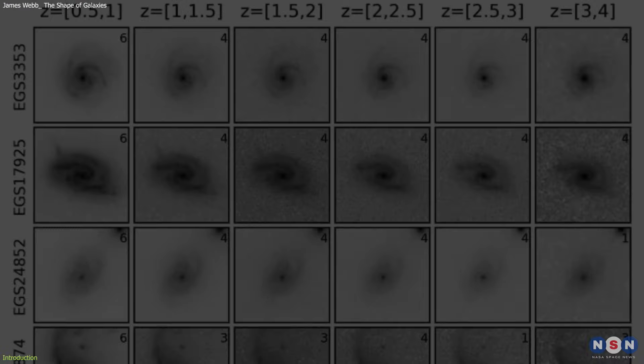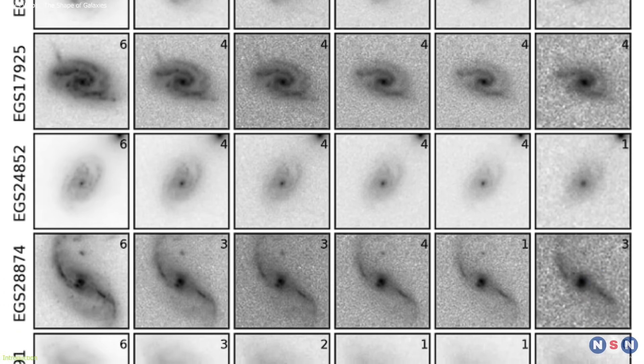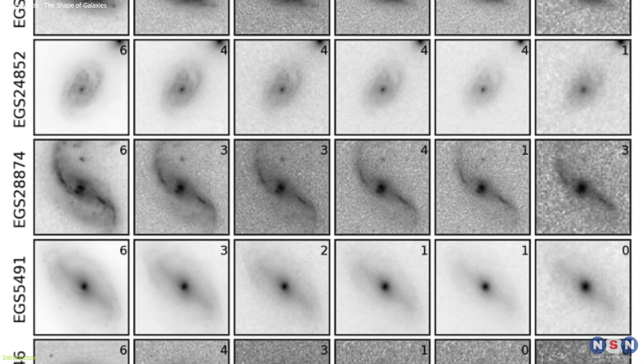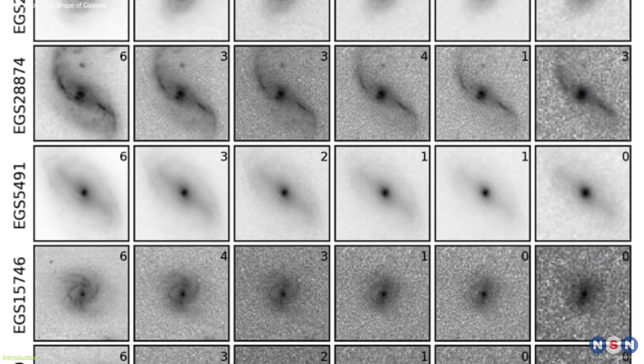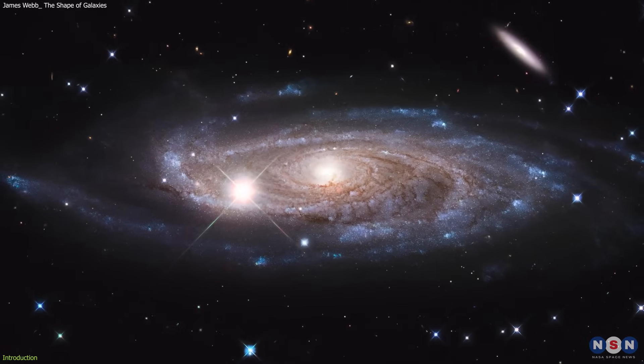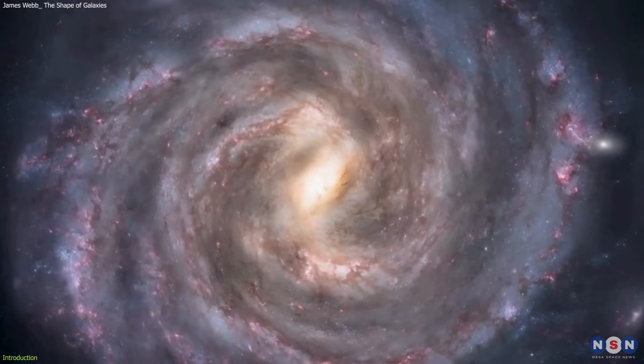We will also see how the Webb images reveal new insights into the formation and evolution of spiral galaxies, which are the most common type of galaxies in the local universe, including our own Milky Way.